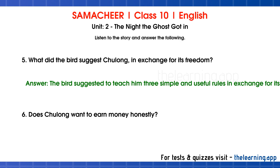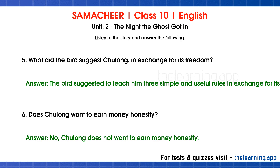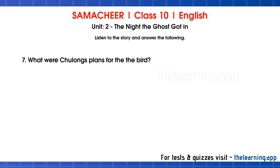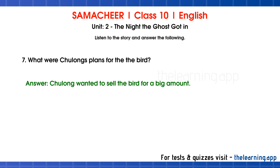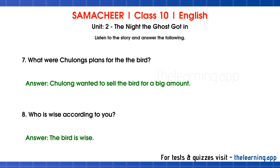Question 6: Does Chulung want to earn money honestly? Correct answer is: no, Chulung does not want to earn money honestly. Question 7: What were Chulung's plans for the bird? Correct answer is: Chulung wanted to sell the bird for a big amount. Question 8: Who is wise according to you? Correct answer is: the bird is wise.